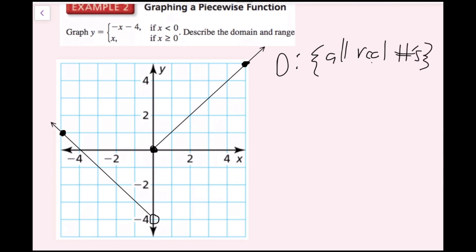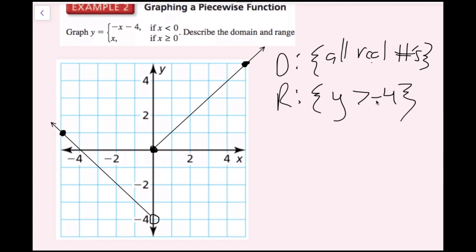For the range, the lowest value is just above negative 4 — y will never actually equal negative 4, but it gets infinitely close to it. Looking in both directions, the graph goes up to infinity. So the range is y is greater than negative 4. Now we're done with example 2.